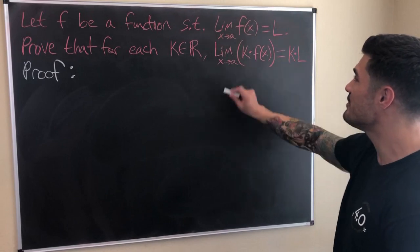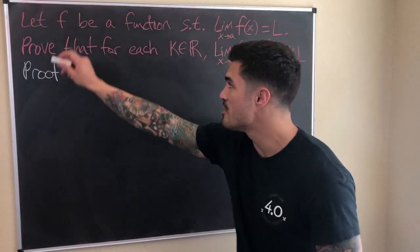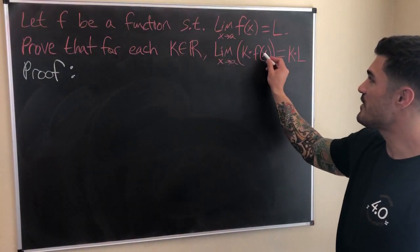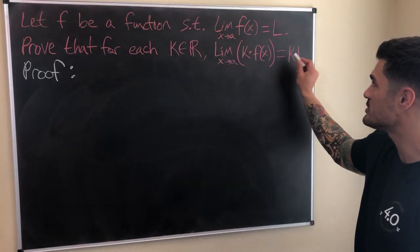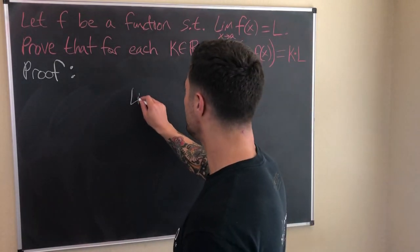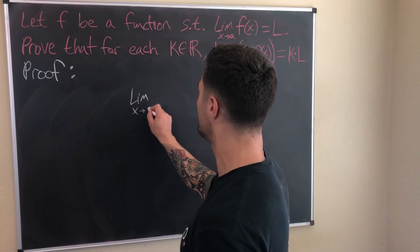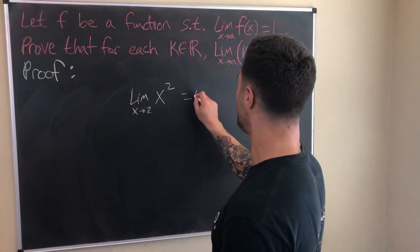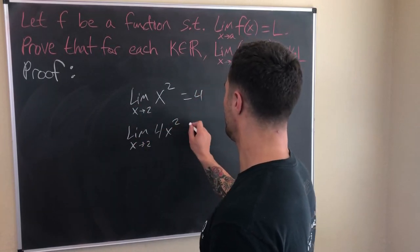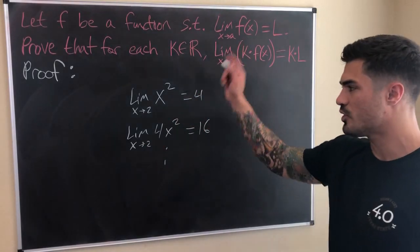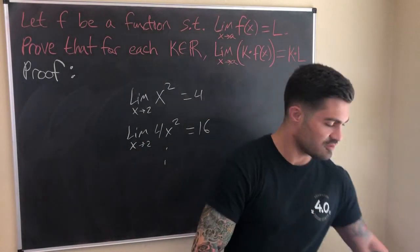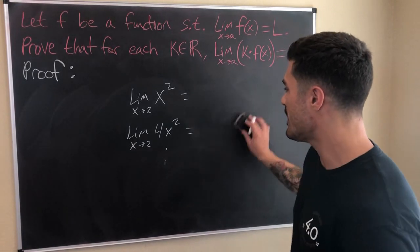Let f be a function such that the limit of f(x) as x approaches a equals L. Prove that for each real number k, the limit of k·f(x) as x approaches a equals k·L. This should be pretty intuitive. For example, if the limit as x approaches 2 of x² equals 4, then the limit as x approaches 2 of 4x² equals 16. This will work for any real number k and for any function where this holds.